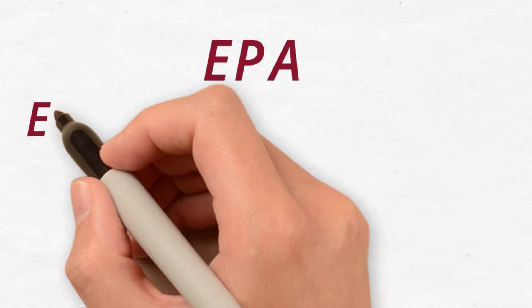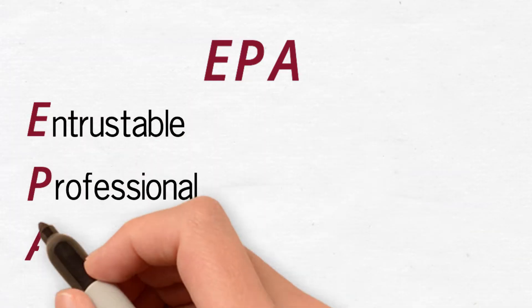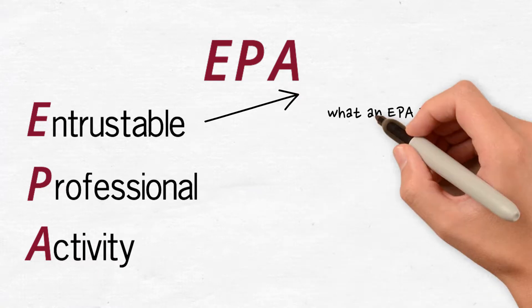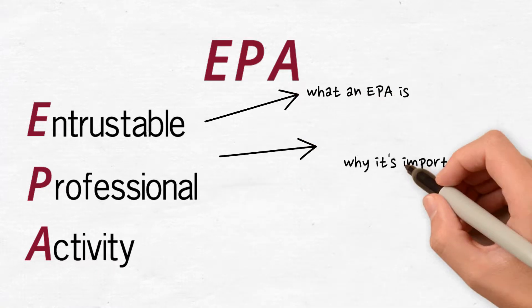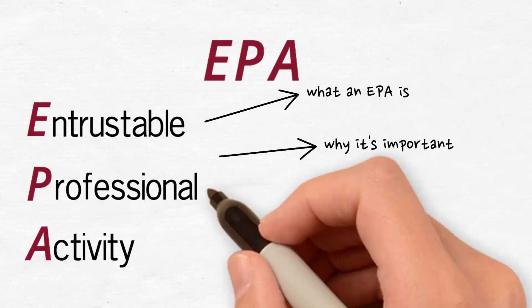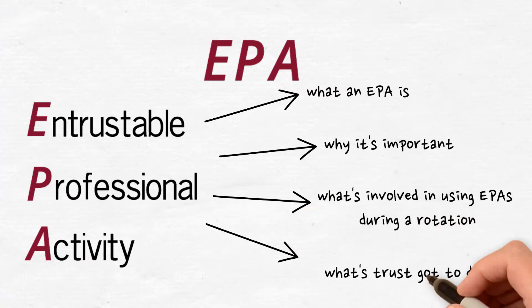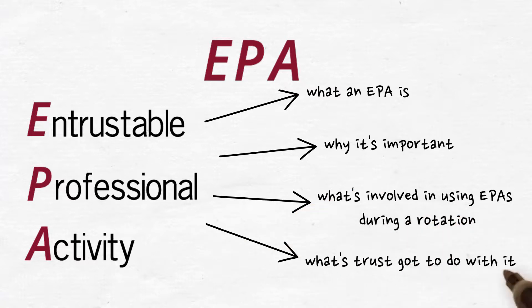This video was created to introduce you to a very interesting way of thinking about both learning and teaching. It describes something called an entrustable professional activity, or EPA. We will cover what an EPA is, why it's important, what's involved in using EPAs during a rotation, and what's trust got to do with it.